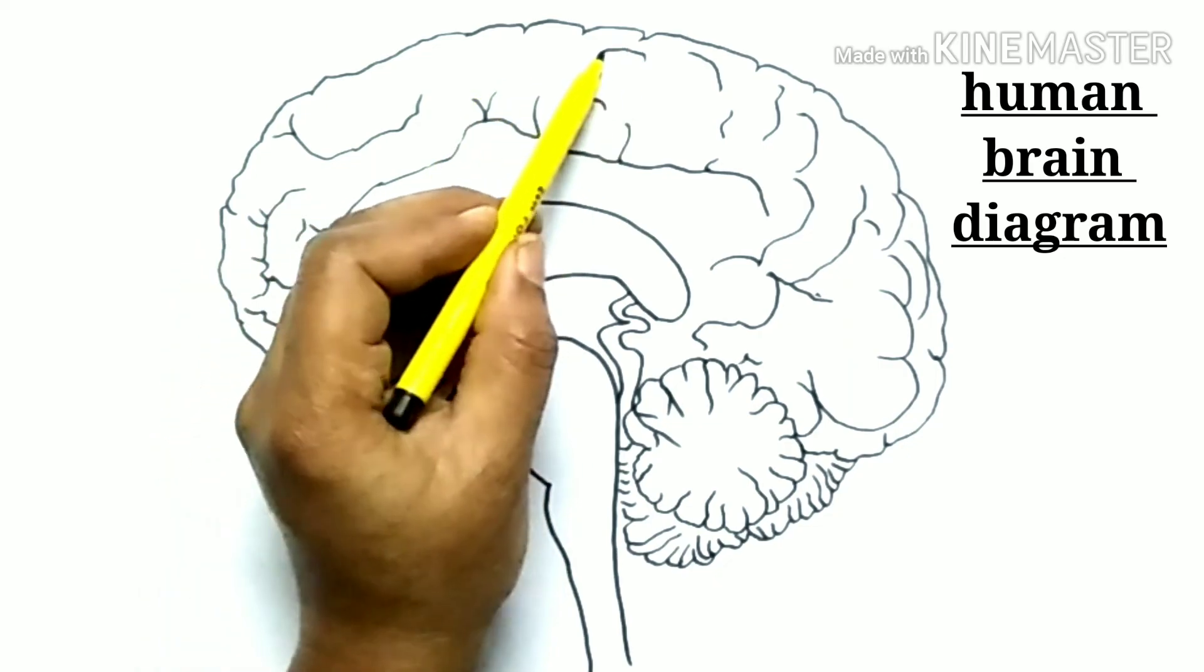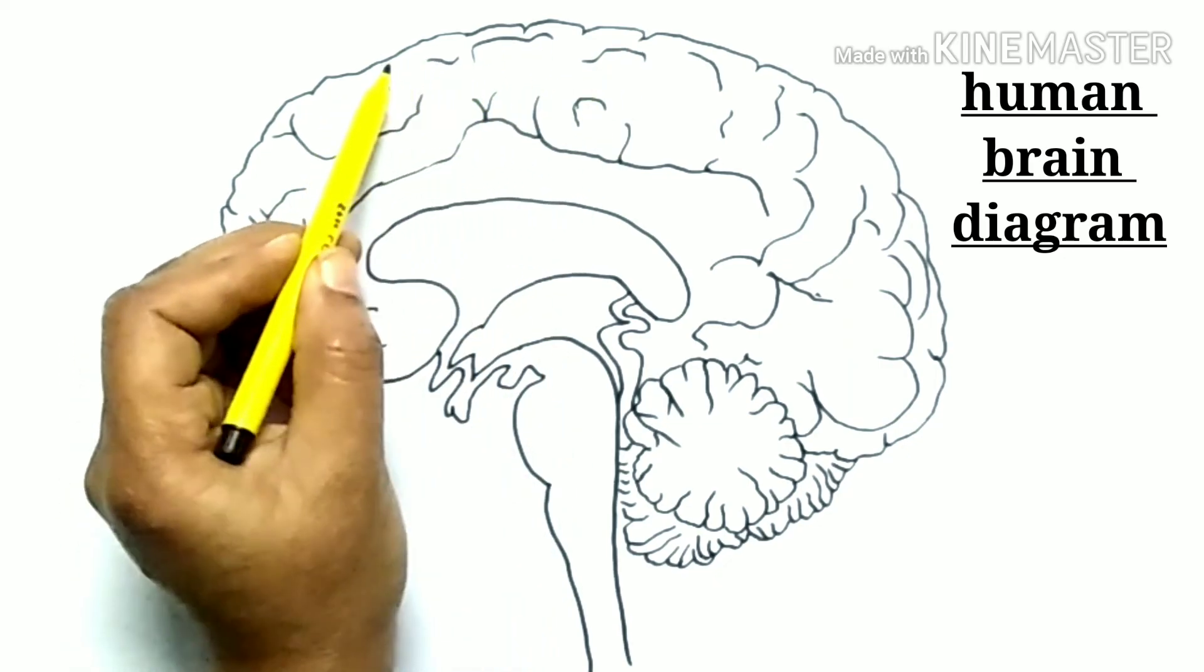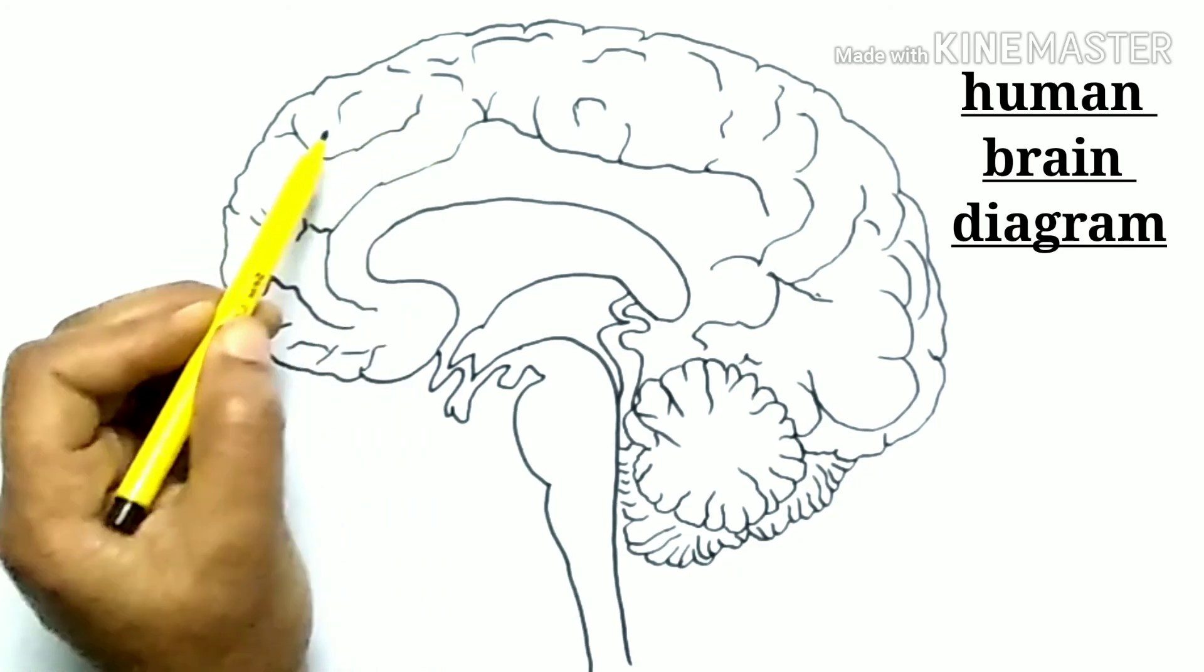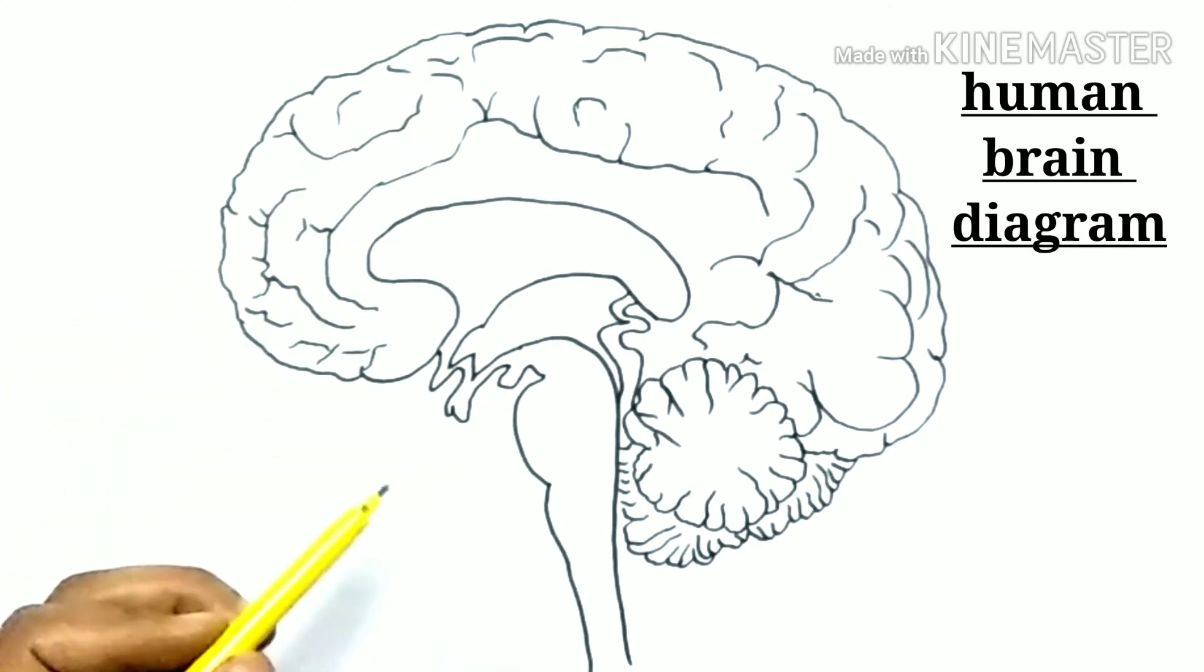The human brain begins to lose some memory abilities as well as some cognitive skills by the late 20s.